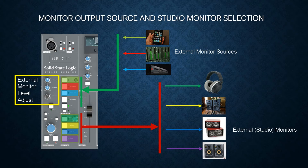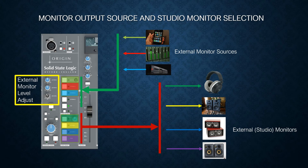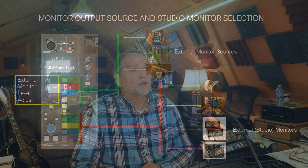Finally, we come to the monitor output and studio monitor selection. In the main section of Origin you have the option of three external monitoring sources: for example an iPhone plugged into Alt 3, the DAW output, the output from your interface, and the main mix coming out of Origin. Each of those can be sent to four locations: a set of headphone mixes with a volume control, External 1, External 2, and Main for several sets of speakers. The external monitor level adjust allows you to calibrate alternate monitors 1 and 2 to the same level as the main, so when you switch between monitors you get the same level.